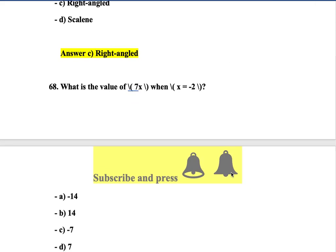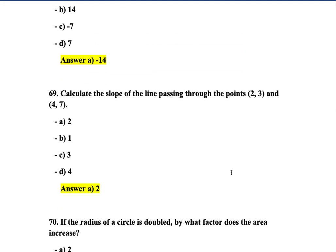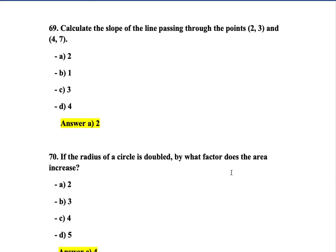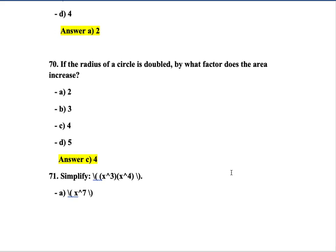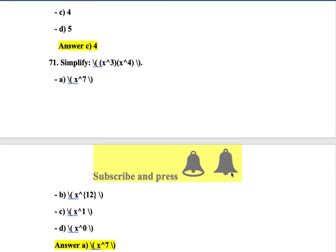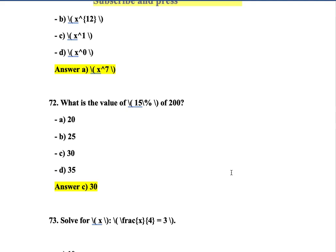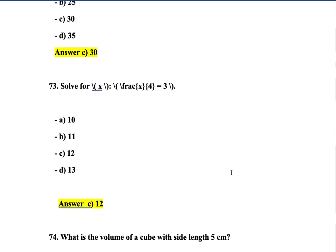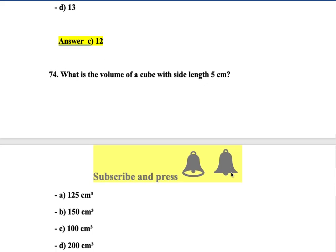Question 67: A triangle has sides of length 5 — the correct answer is a right angle. Question 68: What is the value of 7x when x = -2? It is -14 — option A. Question 69: Calculate the slope of the line passing through points (2,3) and (4,7) — option A. Question 70: If the radius of a circle is doubled, by what factor does the area increase? Option C. Question 71: Simplify x⁴ · x⁴ — option A. Question 72: What is the value of 15% of 200? Option C. Question 73: Solve for the variable — answer is 12 — option C.